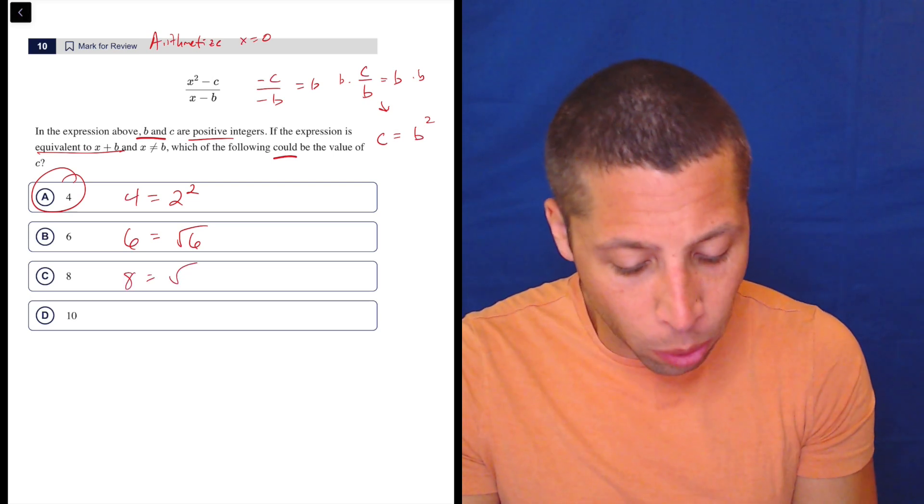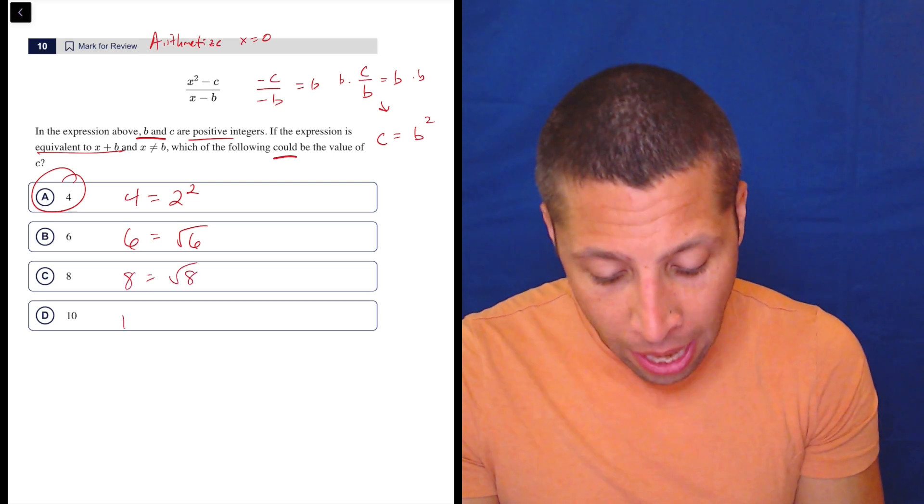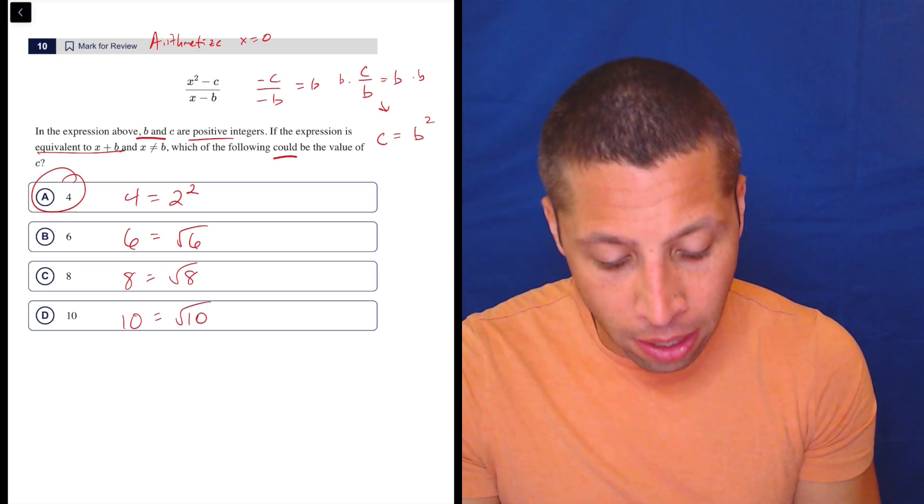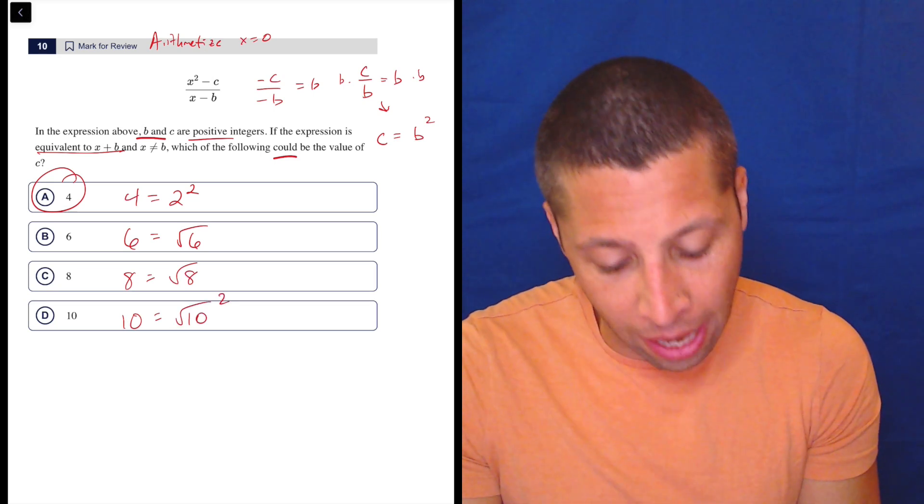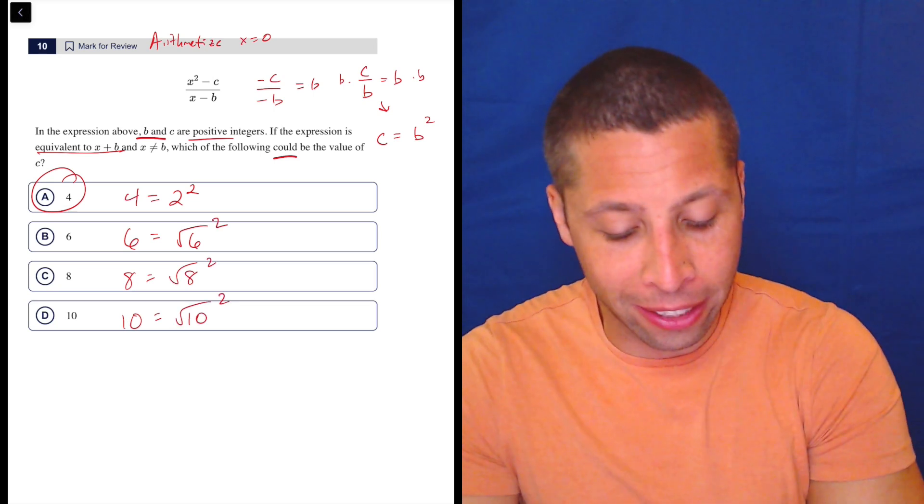And the same thing would happen for eight. This would be the square root of eight, which is also a decimal. And then this would be the square root of 10. So I got to put these squares here to really make it clear, I guess.